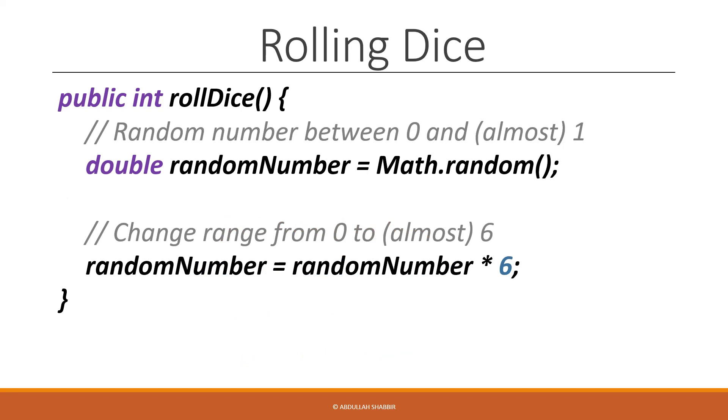Then the random number here will be between 0 and nearly 6. But that's not quite what we want, because now we have just expanded our range from 0 to almost 1 to 0 to almost 6. And we wanted the minimum value of our range to be 1 and not 0. And we wanted our highest value to be nearly 7 and not 6, so that later we can cast this value to an int.